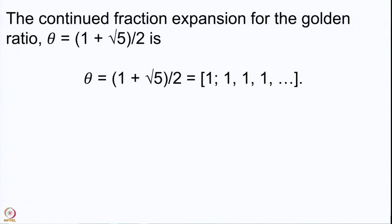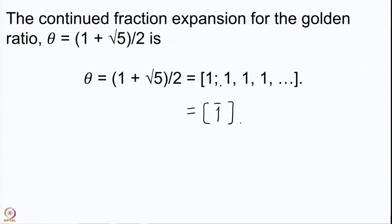Before that, let us recall that we obtained the continued fraction expansion for the golden ratio θ = (1 + √5)/2. We noted that this is periodic because it simply repeats from the first step onwards. We write it as [1̄] to denote the periodic expansion. This is a very important number, and its convergents are some particularly interesting numbers.